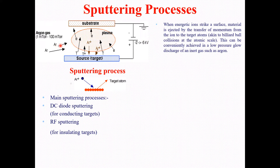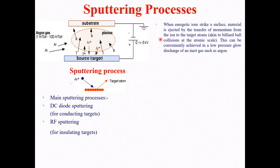The argon ions are accelerated toward the target. When they reach the target, the target material is ejected by transfer of momentum from the ions to the target atoms. These ions carry a certain momentum which is transferred to the source, and as a result the source material is ejected — like a billiard ball collision at the atomic scale.